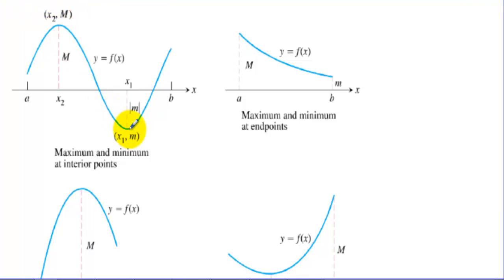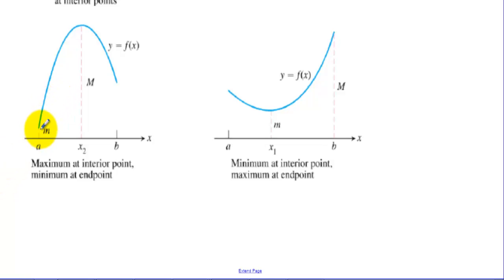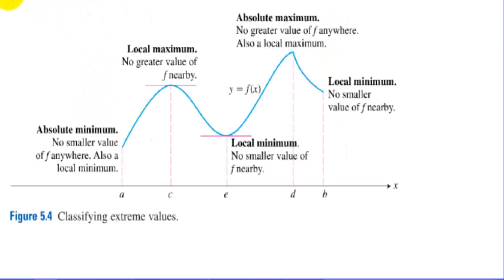This graph has an overall maximum and an overall minimum happening at interior points, with a local maximum and a local minimum at an endpoint. Here we have a maximum and minimum both happening at endpoints. In another case, we have a local minimum, an overall minimum, and an absolute maximum at an interior point. Then a local minimum at an endpoint, an overall minimum at an interior point, and an absolute maximum at an endpoint. This chart summarizes: absolute minimums, local maxes, local minimums, absolute max, and a local minimum at an endpoint.